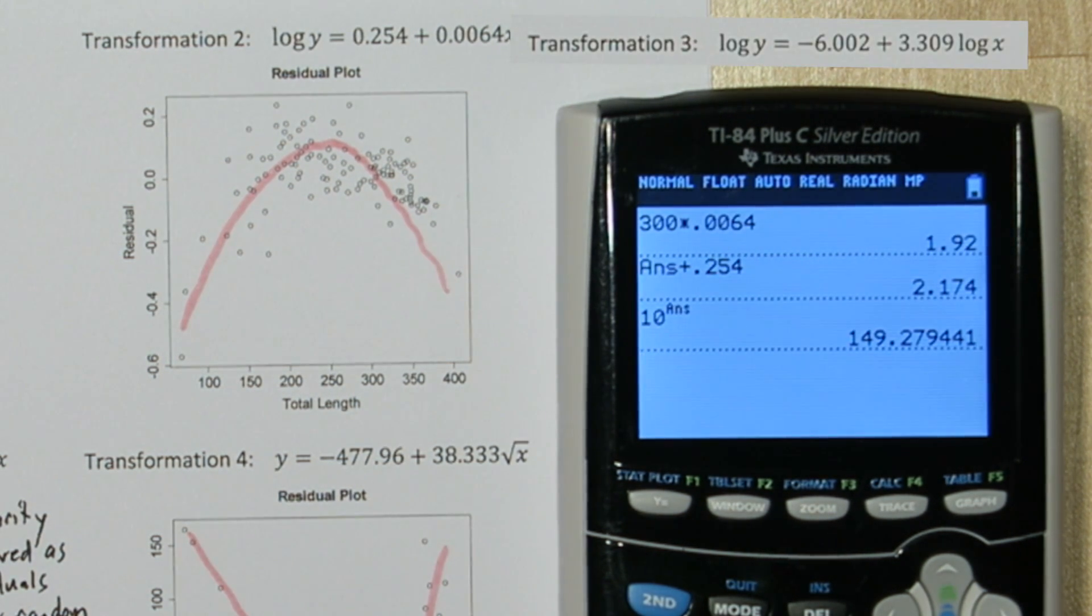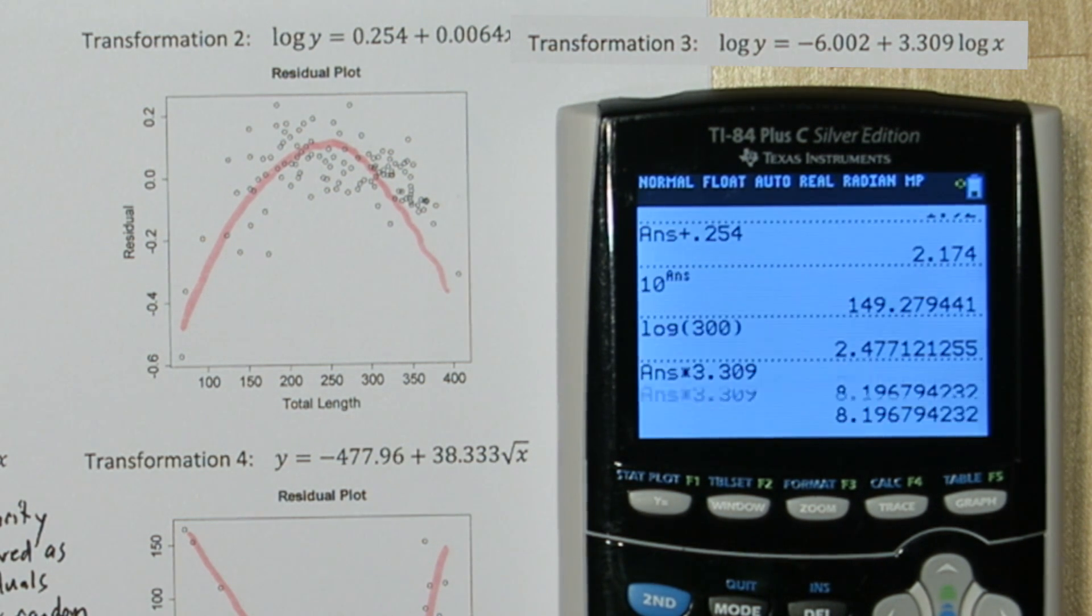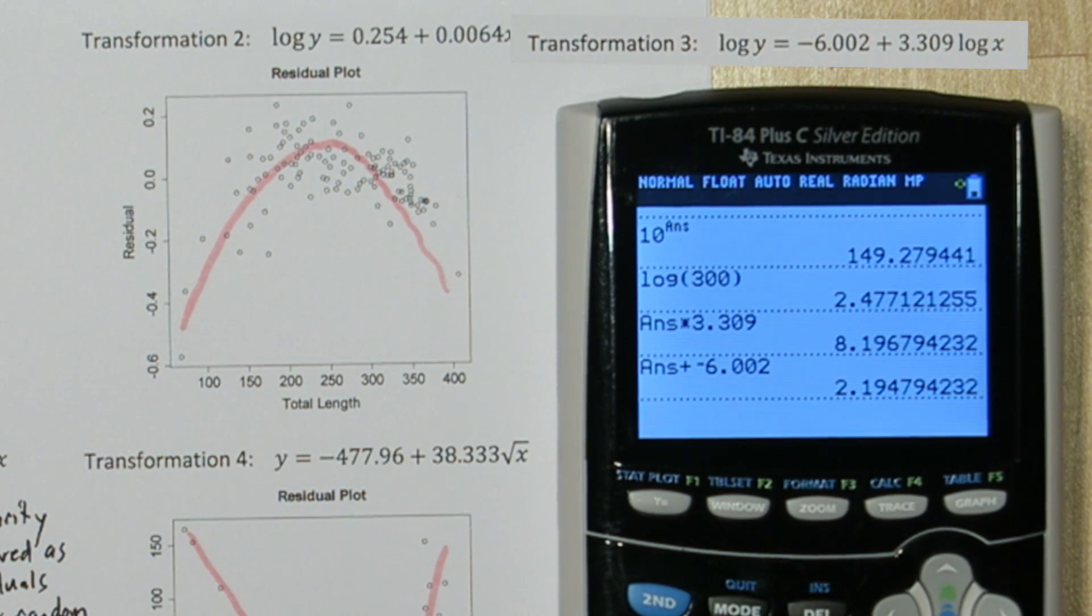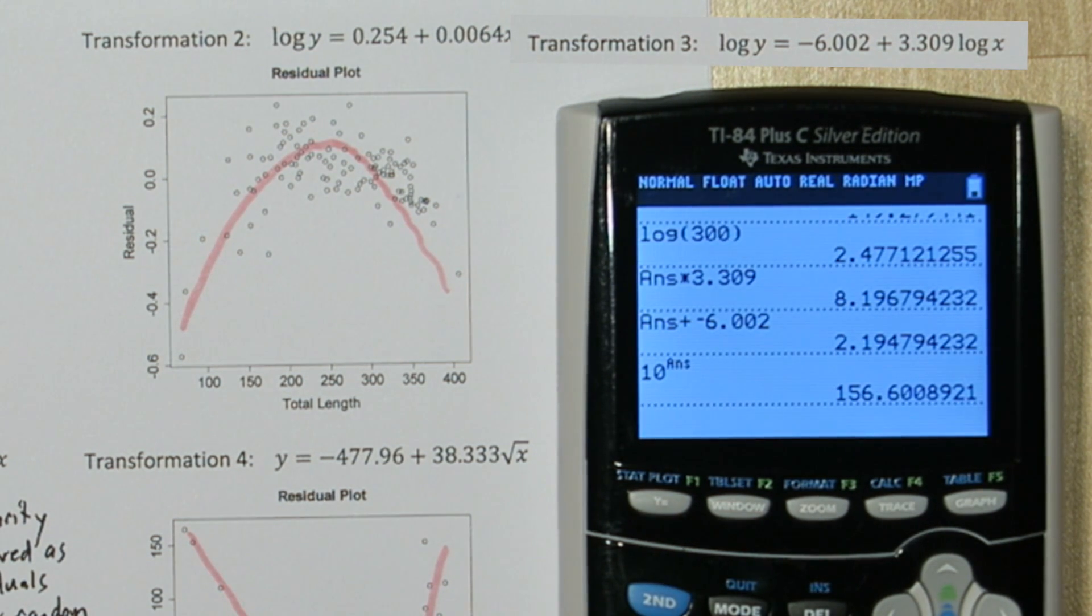Alright on our third transformation, we need to take the log of 300. So I'll type log and 300 and we need to multiply this by the coefficient. Then, add in our y-intercept. Okay, and just like transformation 2, I need to raise 10 to this power, since this gives us the log of the weight. Alright, this model predicts the shark will be 156.6 kg approximately.